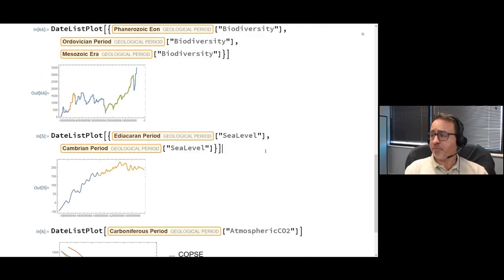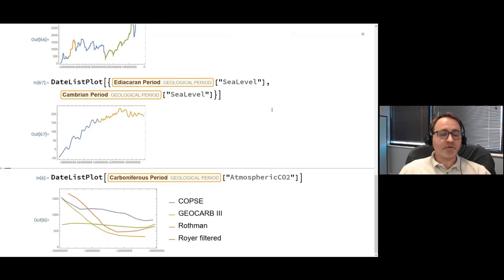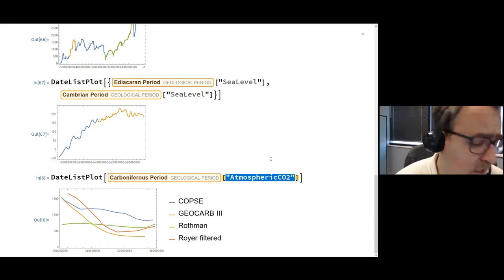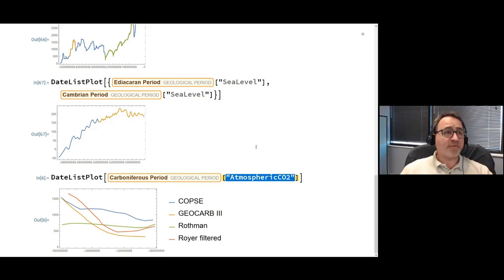We've also got time series data on sea level. Here I've plotted the sea level changes throughout the Adiacaran period and the Cambrian period. This is just before the Cambrian explosion. You can see sea levels were on the rise. There's also atmospheric CO2 data. Some of the atmospheric stuff is related to climatology. You can get multiple curves showing the trend depending on how they derived their estimates. These vary quite a bit, so you have to be careful with these types of studies.